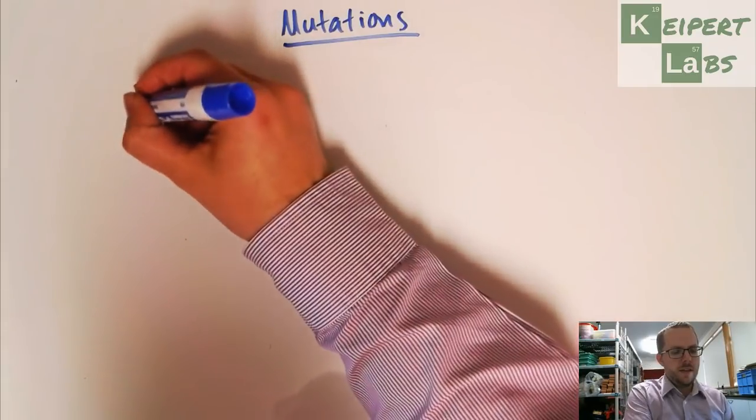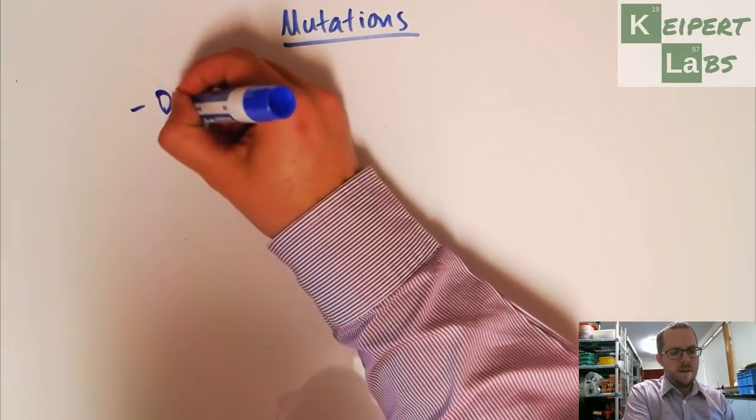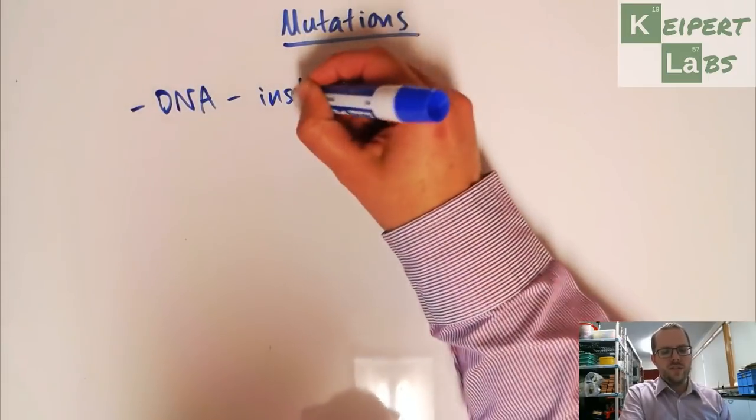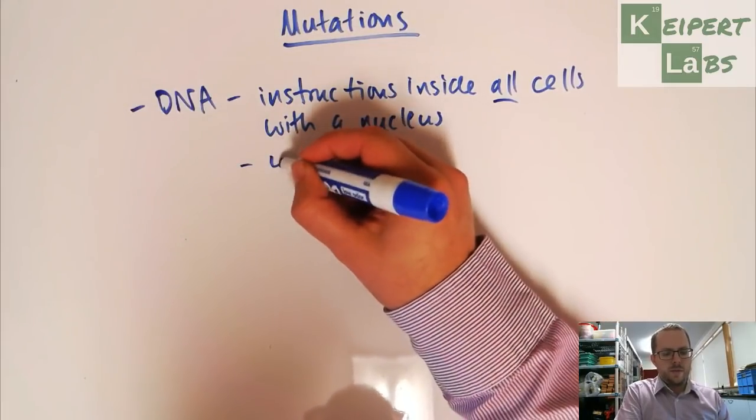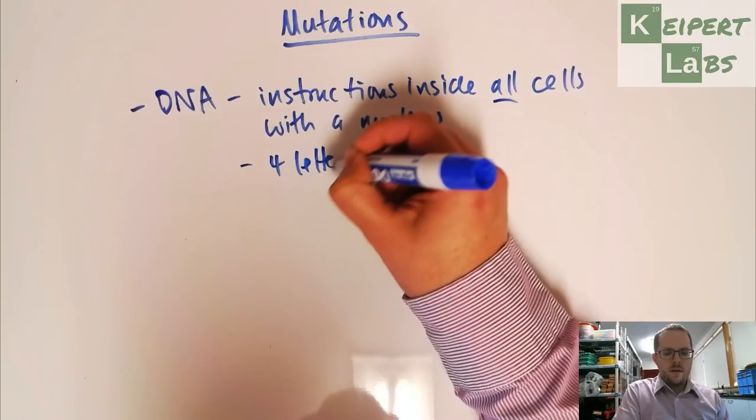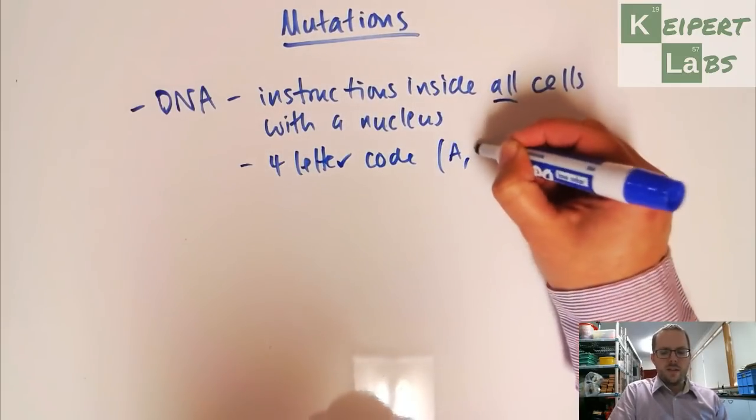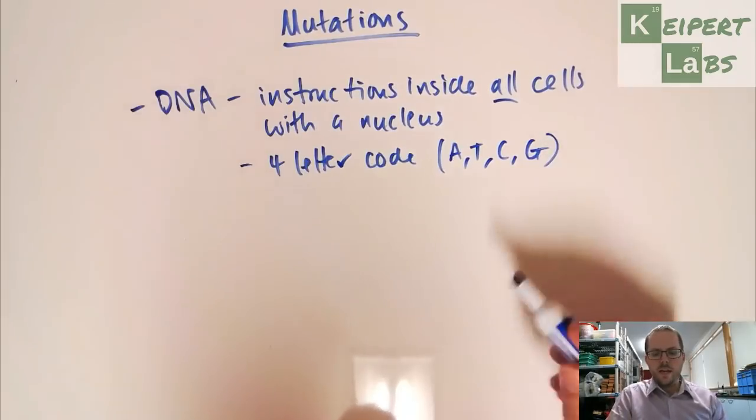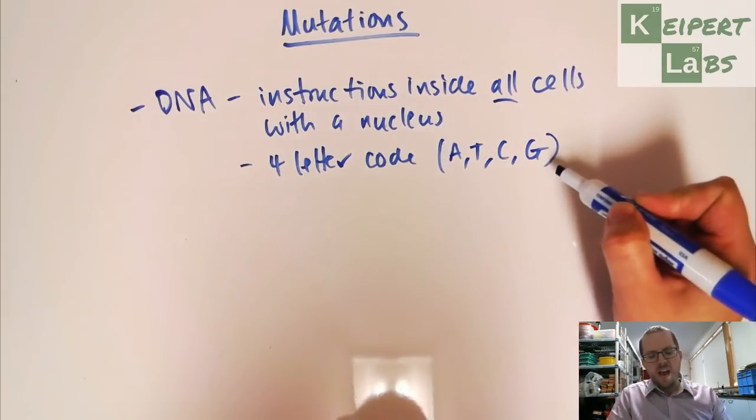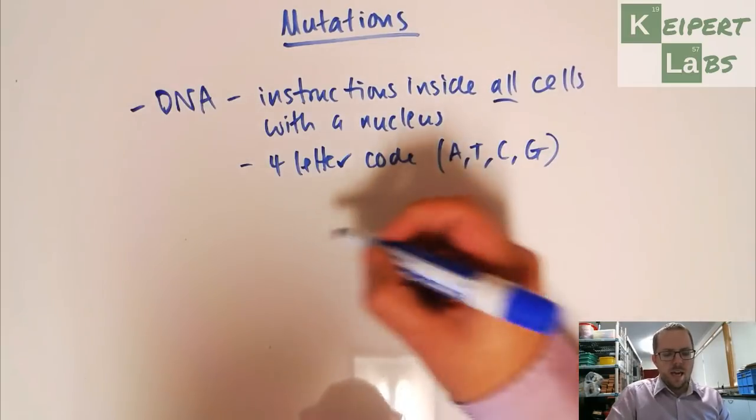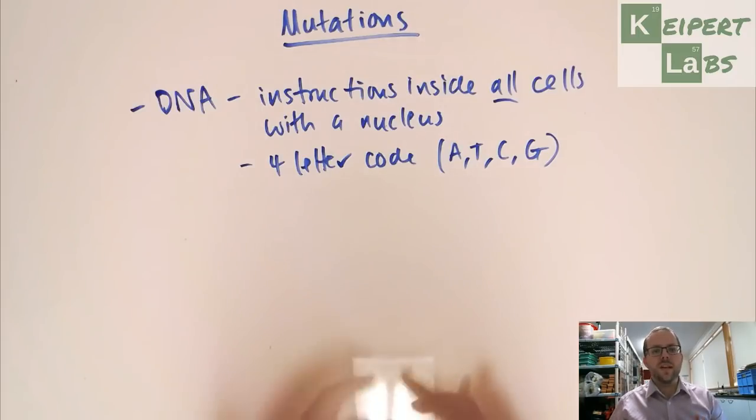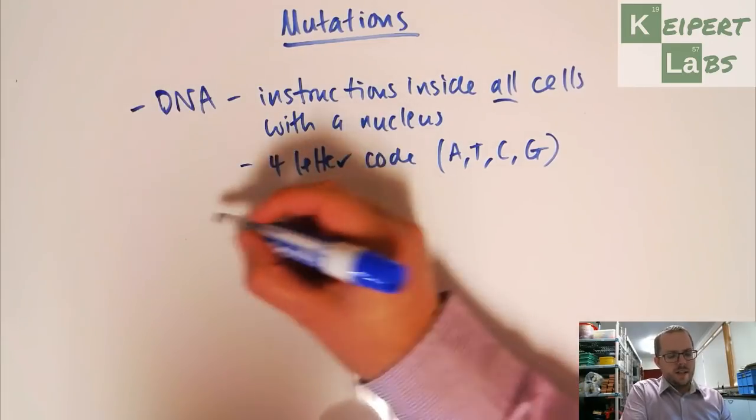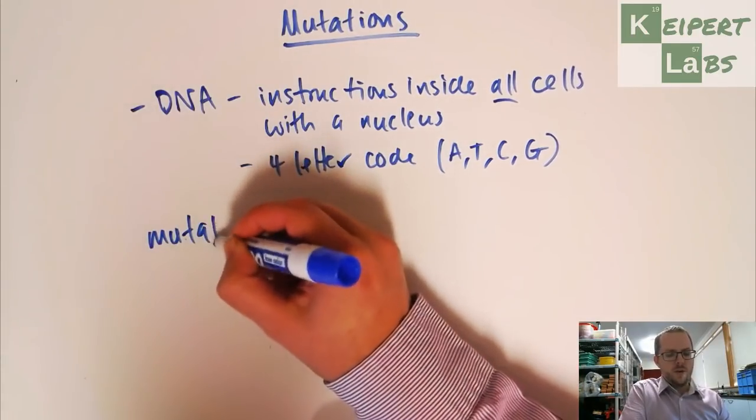So we've already identified that DNA is the instructions inside all cells with a nucleus. And we've also identified that it has a four-letter code, made of the four bases A, T, C and G: Adenine, thymine, cytosine and guanine. And that the sequence of the code gives rise to the meaning or the way that your cells can read those instructions. And so what we're looking at now is this idea that sometimes that code can be changed.